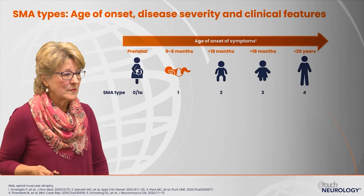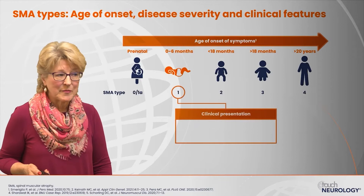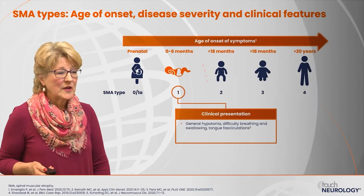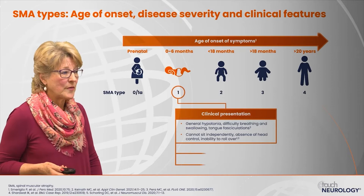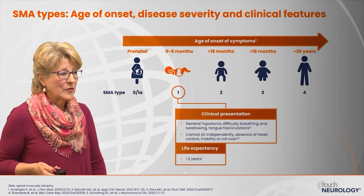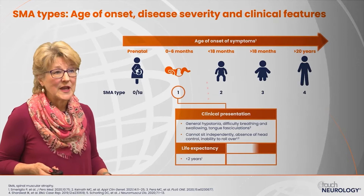Type 1 patients will have symptoms under the age of 6 months, including generalized hypotonia, difficulty breathing and swallowing. These patients frequently have tongue fasciculations, are not able to sit independently, have very poor head control, and are not able to roll over. Life expectancy prior to any disease-modifying therapies was less than 2 years for 95% of these patients. This is the most prevalent SMA type, about 45% of cases.